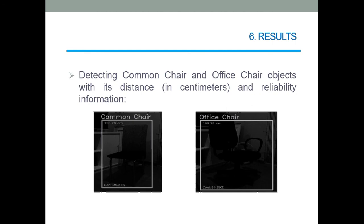In this box, on the upper left corner, can be seen the distance of the object in centimeters. Also can be seen the reliability of the object's detection on the bottom left corner of the box.